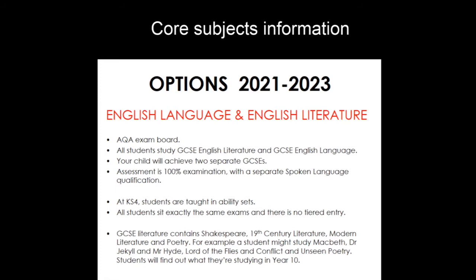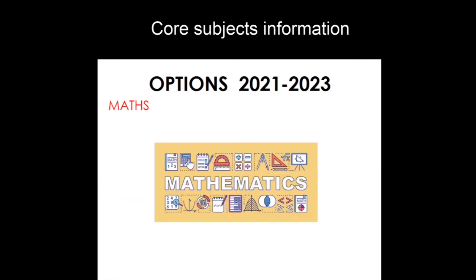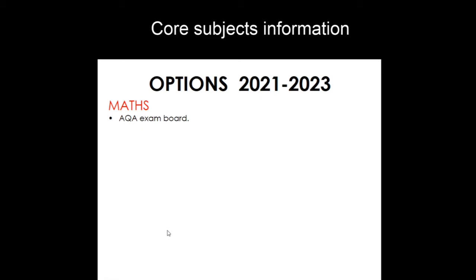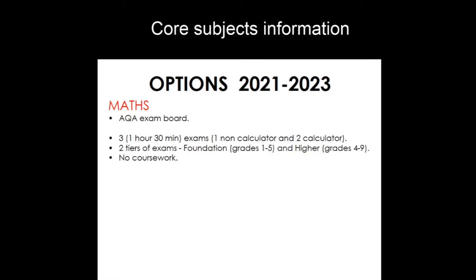I'll now hand over to our Maths Faculty Leader, Andy Fishburne. Like English, we follow the AQA exam. We have three terminal papers in June and July. Paper 1 is calculator; Papers 2 and 3 are non-calculator, giving a total of four and a half hours of exams for maths. There is no coursework element.